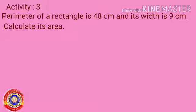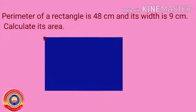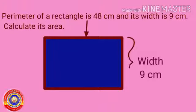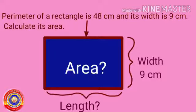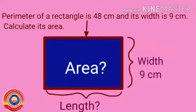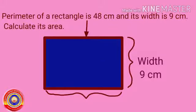Activity number three: the perimeter of a rectangle is 48 centimeters and its width is 9 centimeters — calculate its area. For finding the area, we need the length of this rectangle first. So we have to find the length from the perimeter given, and after that we can find the area of this rectangle.